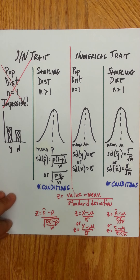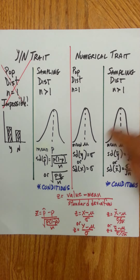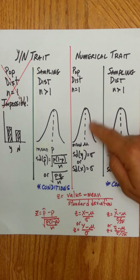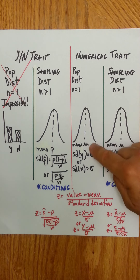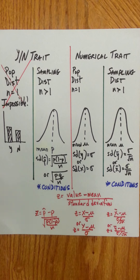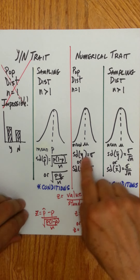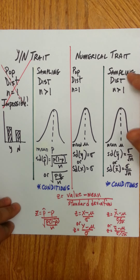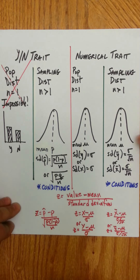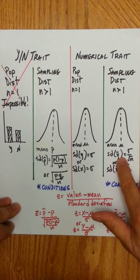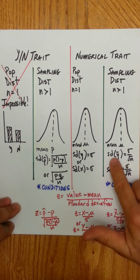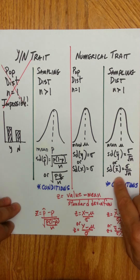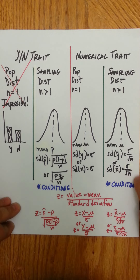For a numerical trait, it is possible to have both a population distribution and a sampling distribution. If the sample size is one, you can take the values one at a time and immediately put those values into piles. The center of that distribution will be mu and the standard deviation will be sigma. For a sampling distribution, your sample size is anything greater than one. As long as conditions are met, your mean is mu, and the standard deviation of the y-bars is sigma over square root of n — or for x-bars, it's still sigma over square root of n. It's the same formula.